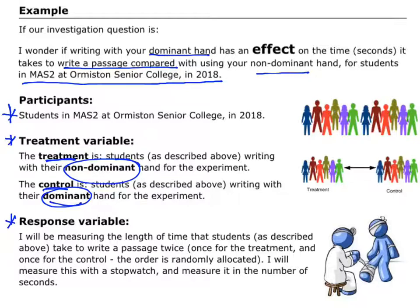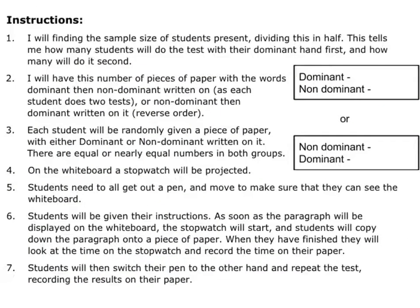The response variable is what I am measuring. For this one, we are going to measure the length of time that students take to write the passage — done twice, once for treatment and once for control. I'm going to measure this with a stopwatch, and I'm going to measure it in seconds, so I've given my units. For the step-by-step instructions, I'm going to find out the sample size of all students present — say I had 28 students in my class that day. I'm going to divide that in half, giving me 14.